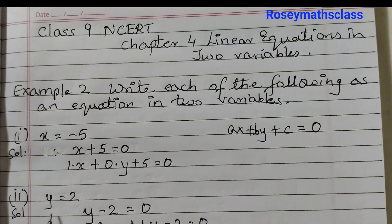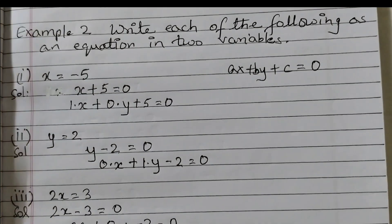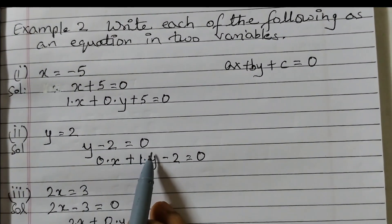Second one is y is equal to 2 so get 2 to the other side, y minus 2 is equal to 0.